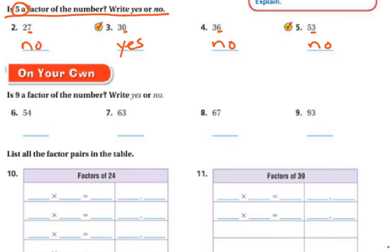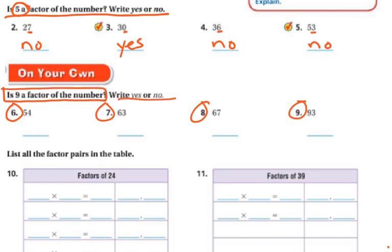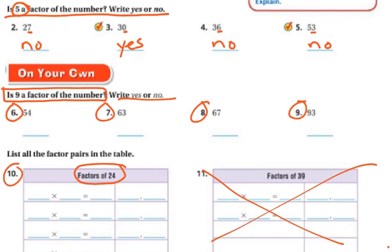On your own, I'd like you to do numbers 6, 7, 8, and 9. You're looking to see if 9 is a factor — yes or no. You can use your times table chart to check if 9 goes in equally. Then list all the factor pairs for 24. Enter those answers into a Google form and do the Think Central today. Good luck — if you need me, I'll be on the carpet.